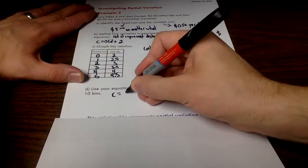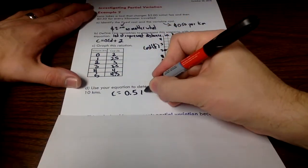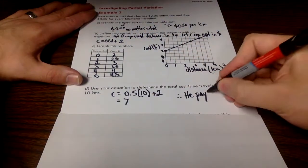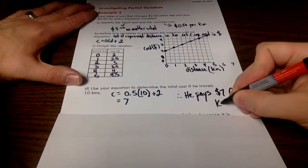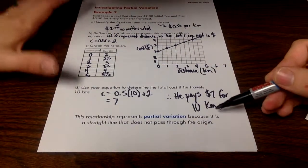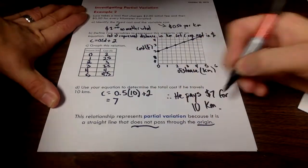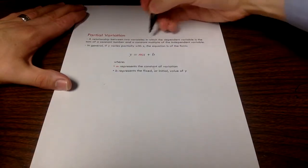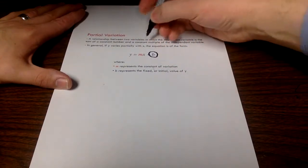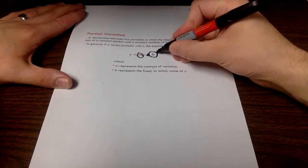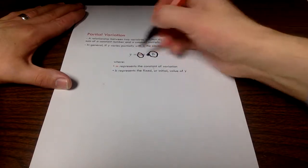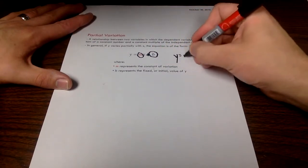Now I want to use the equation. Cost is going to be 50 cents. I'm going to substitute 10 for the number of kilometers. End up with seven. He pays $7 for 10 kilometers. So this relationship we call a partial variation relationship because it's a straight line that does not pass through the origin. This is the relationship between two variables. We're taking this constant number, this was like our $2, we're going to add our constant variation. This is our fixed cost, this is our variable cost. And we get this y equals mx plus b equation.